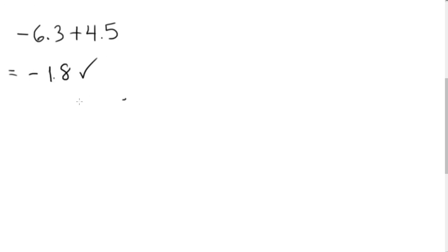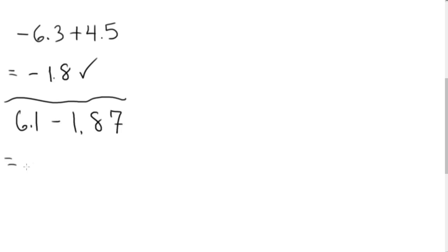Let's look at another example: 6.1 minus 1.87. I can see my sign is going to be positive because the larger number is positive. Taking the difference: 6.1 minus 1.87 gives me 4.24. Dropping the positive sign, the answer is just 4.24.